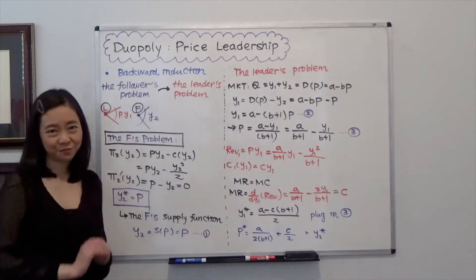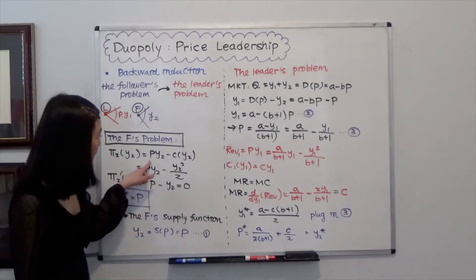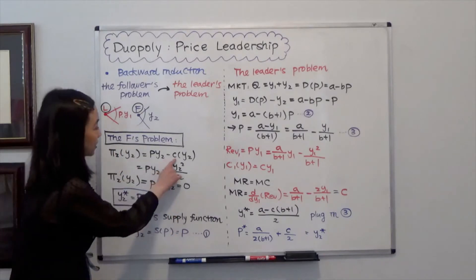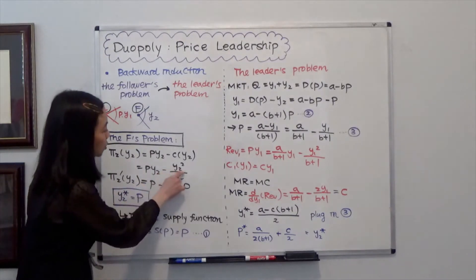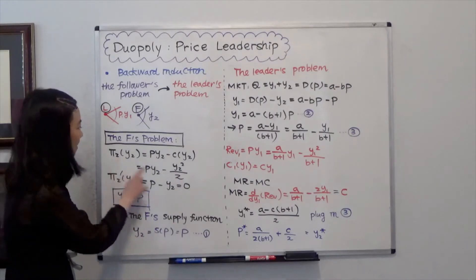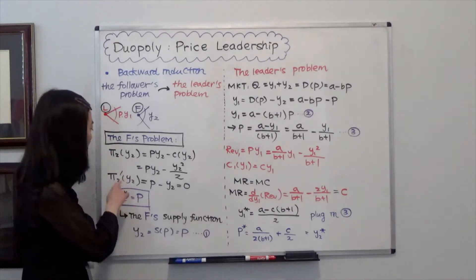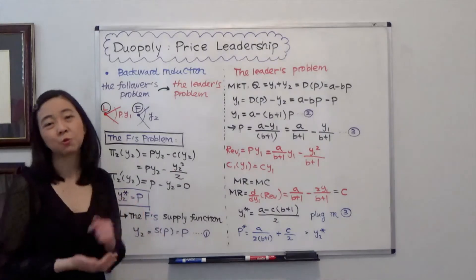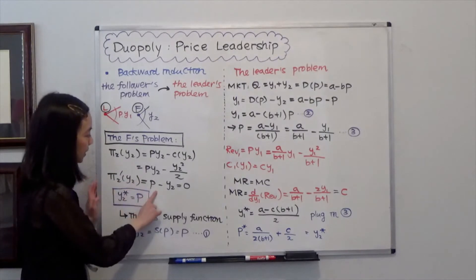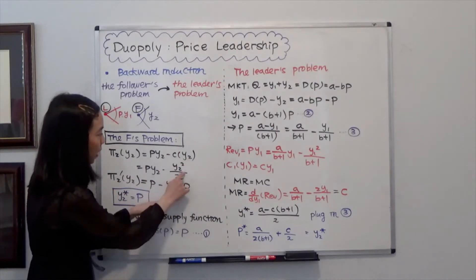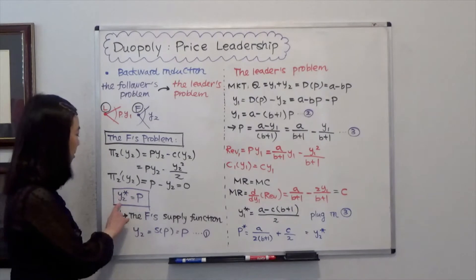The follower will take the price as given, and its own profit function π2 is equal to the revenue P times Y2 minus the cost function C(Y2). You are given that the cost function is equal to Y2 squared divided by 2. We take the derivative of the profit function with respect to Y2 and set it equal to 0. The derivative of Y2 squared divided by 2 is just Y2, set it equal to 0, so Y2* is equal to P.